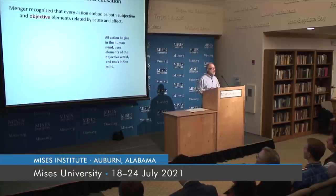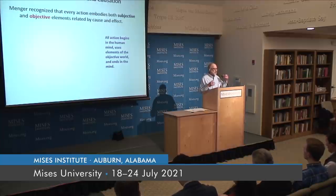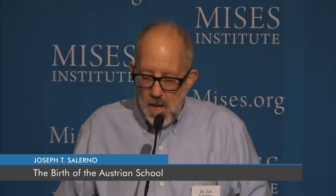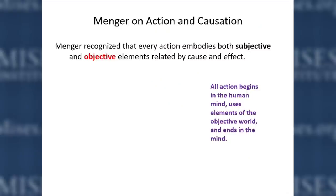We live in the real world, not just in our own heads. What Menger wanted to do was combine the subjective with the objective. In order to do that, you have to focus on action and causality, on people's wants and expectations, but also on their surroundings and environment. Some Austrian economists have gone to the extreme of almost denying objective reality — we call them Lachmanians. Menger recognized that every action embodies both subjective and objective elements, related by cause and effect. All action begins in the human mind, uses elements of the objective world, in order to satisfy what was in the human mind.